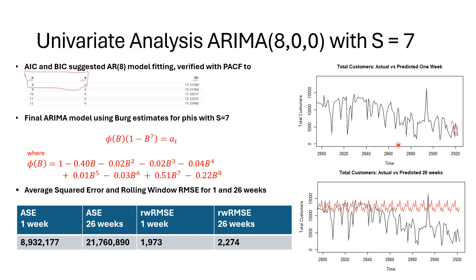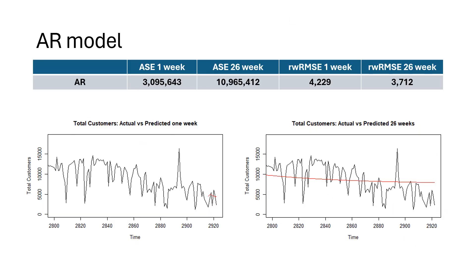Looking at the verification plots, the 1-week forecast looks pretty good, but the 26-week forecast does not perform as well. We also have an AR model which does not include the seasonal component, and we can see that its ASE does very well compared to the ARIMA model with S equals 7. However, the rolling window RMSEs for both the 1-week and 26-week horizons do not outperform the ARIMA model.